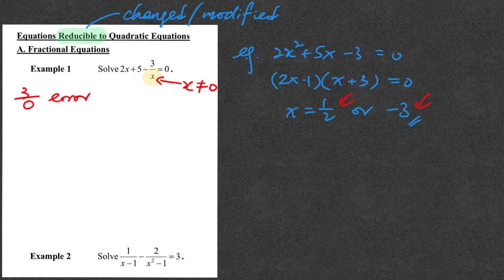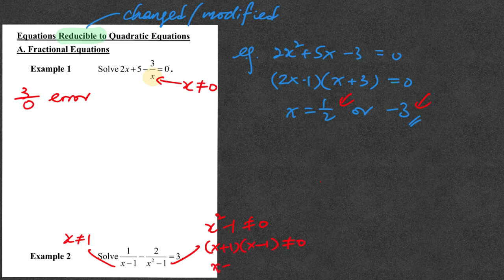If you use this concept to move on to example 2, you will see that the first fraction implies that x cannot be 1. Whereas the second one tells you that x squared minus 1 cannot be 0. By identity, that means x plus 1 multiplied by x minus 1 cannot be 0, which means x cannot be minus 1 as well as x cannot be 1. If you combine the two conditions from both fractions, x cannot be 1 and cannot be minus 1. These are the restrictions in example 2 when you are looking at the answer.